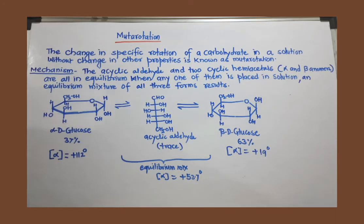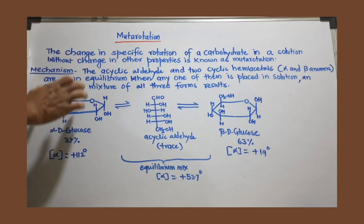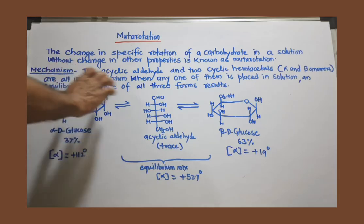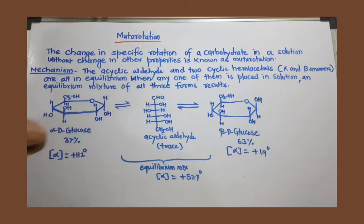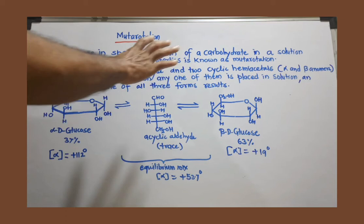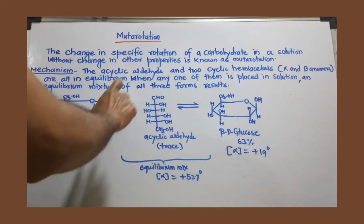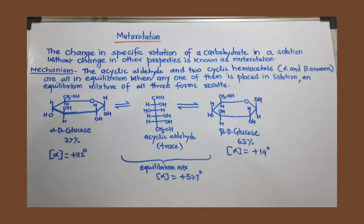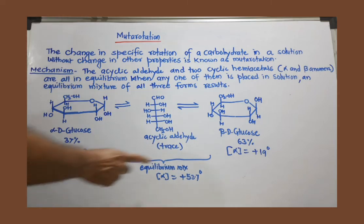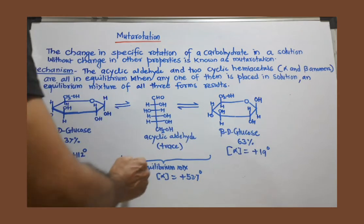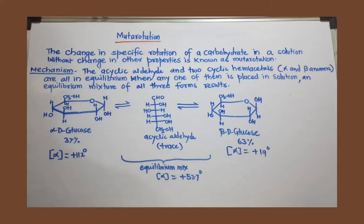That doesn't matter. The only thing is, when you prepare the solution of any one of these three forms, they very soon convert into each other. They are at equilibrium, all three forms are at equilibrium. And because of that, once equilibrium is attained, the mixture has a specific rotation of +52.7 degrees. Both initial values change to +52.7 degrees. This is called mutarotation, and this is a very good property shown by carbohydrates. Thank you.